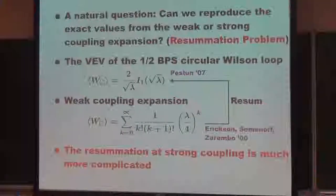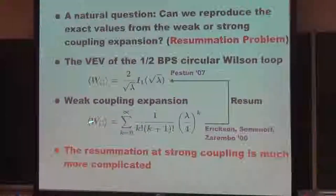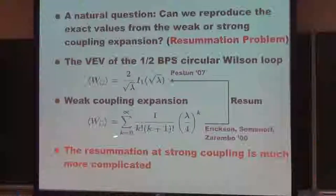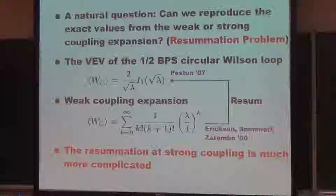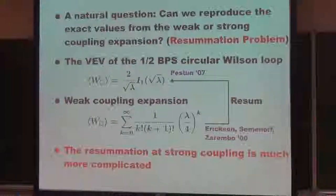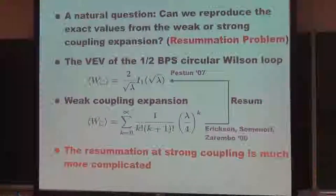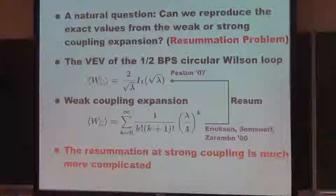One can compute the all-order expansion of the half-BPS Wilson loop. Based on this, one gets the all-order expression, and then we get the same result by localization. So in this case, the weak coupling expansion is easily resummed to all orders. In my talk, I will try to explain that the strong coupling expansion is much more difficult. This is the theme of my talk.